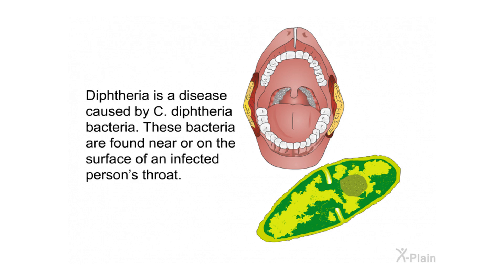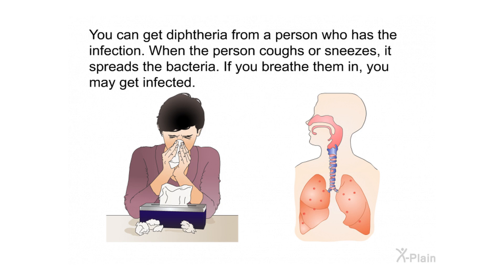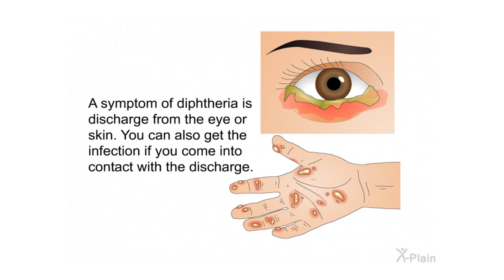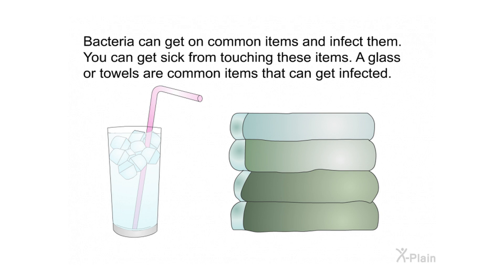Diphtheria is caused by C. diphtheriae bacteria, which are found near or on the surface of an infected person's throat. You can get diphtheria from a person who has the infection when they cough or sneeze, spreading the bacteria — if you breathe them in, you may get infected. A symptom of diphtheria is discharge from the eye or skin, and you can also get the infection if you come into contact with that discharge.